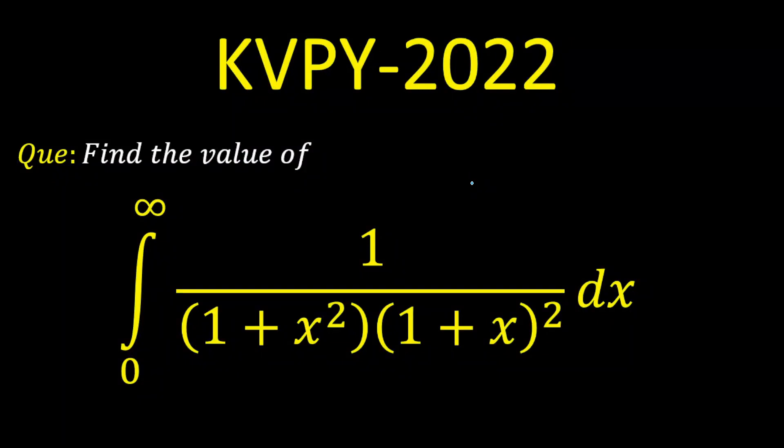Hello everyone, so today we are going to solve a question on integration which was asked in this year KVPY question. The question is integration 0 to infinity 1 upon 1 plus x square multiplied by 1 plus x whole square.